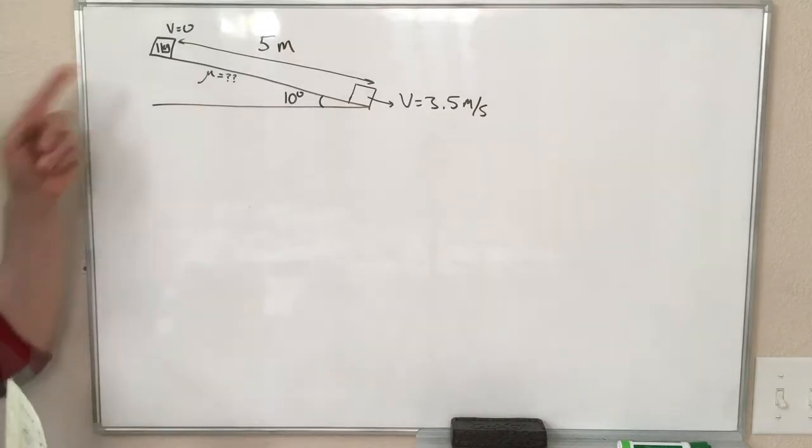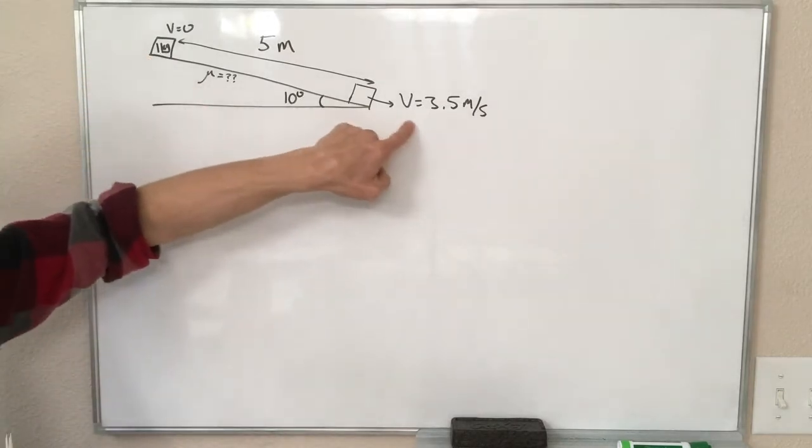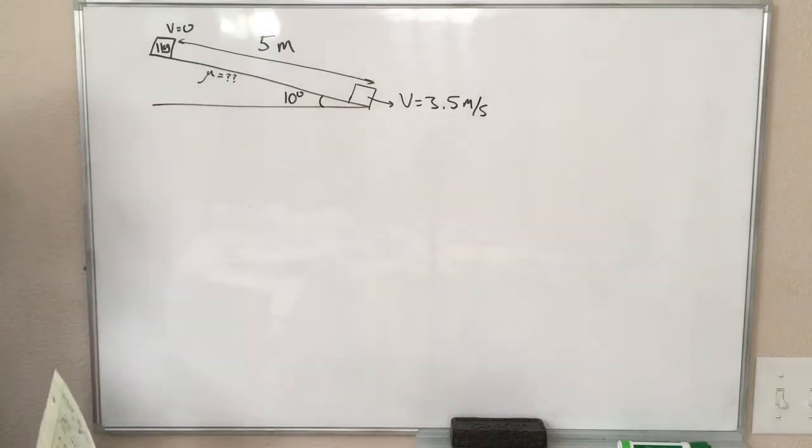Okay, so our 1 kilogram block starts at the top of this ramp. It has slid down to the bottom, and at the bottom it has this 3.5 meters per second velocity.